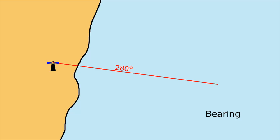A bearing is a position line. So if this lighthouse is on a bearing of 280 degrees, that means that you are sitting on the 280-degree position line. You can be anywhere on this line that represents 280 degrees — here, here, or out here — and have a bearing of 280. So you don't know exactly where you are, but you know that you're somewhere on this line.